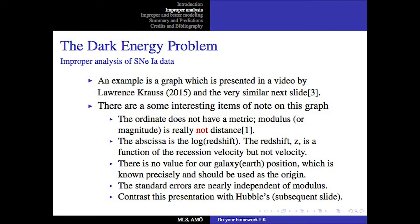More about the dark energy problem. An example is a graph which was presented in a video by Lawrence Krauss in 2015 and is very similar to the next slide. There are some very interesting items to note on this graph. The ordinate does not have a metric. The modulus, or sometimes called magnitude, is really not the distance. It's a log transformed distance. It does not have a metric.